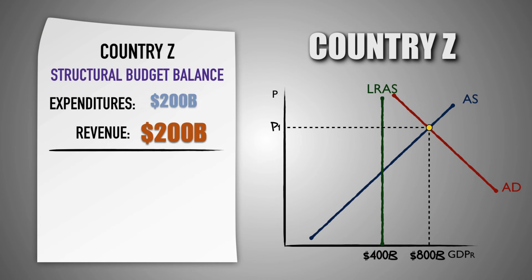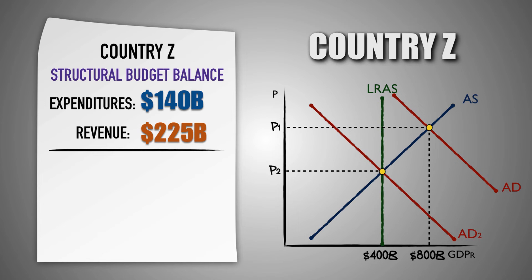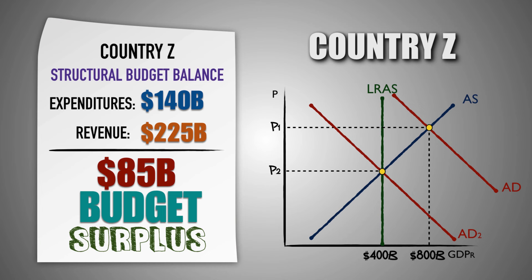If instead the government decided to decrease its expenditures by $60 billion and combine that with a $25 billion increase in personal taxes, it would decrease aggregate demand and reduce real GDP output by $400 billion, returning the economy to full employment. However, because the government decreased its spending by $60 billion, it would create a $60 billion budget surplus in country Z. Then, when the government raised taxes by $25 billion, it increased the budget surplus by an additional $25 billion. The entire fiscal restraint package opened an $85 billion budget surplus in country Z.